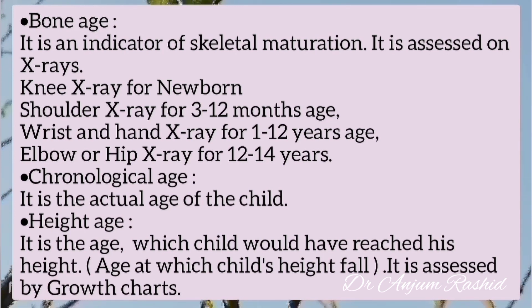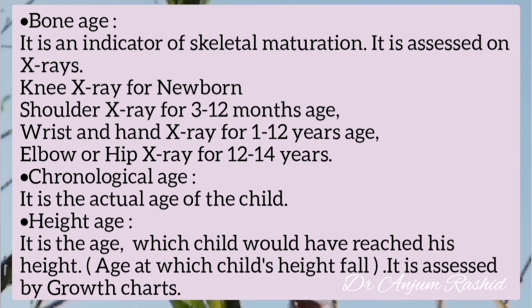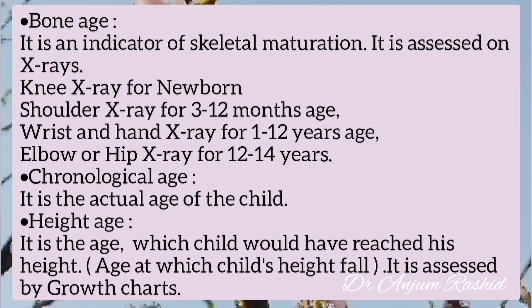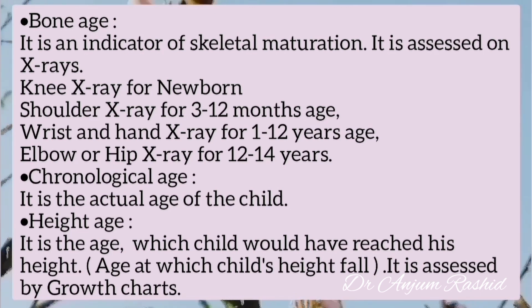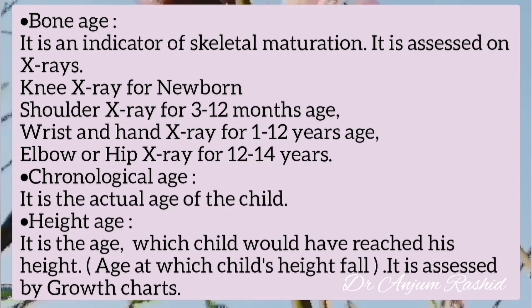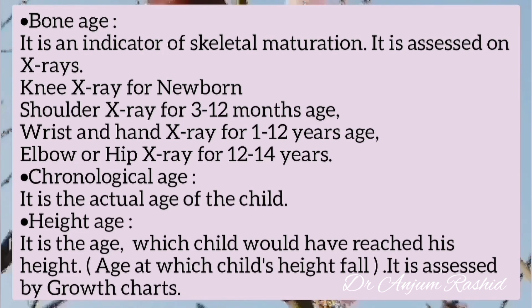Bone age is an indicator of skeletal maturation. It is assessed on X-ray: knee X-ray for newborns, shoulder X-ray for 3 to 12 months of age, wrist and hand X-ray for 1 to 12 years of age, and elbow or hip X-ray for 12 to 14 years. Chronological age is the actual age of the child. Height age is the age at which the child's height falls on the growth charts.